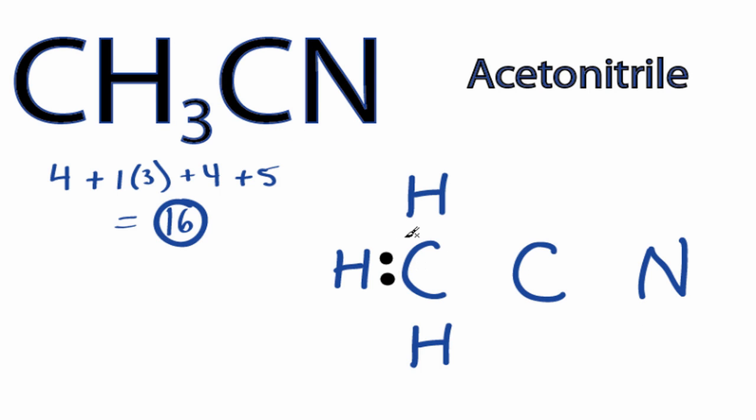We'll put two electrons between atoms to form chemical bonds, we've used 6, 8, 10, and then around the outside, 12, 14, and we've used all 16 valence electrons right now that we started with.